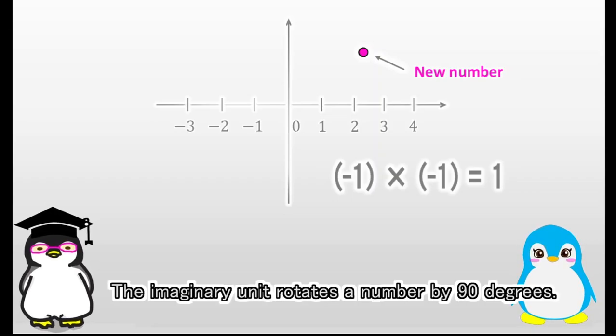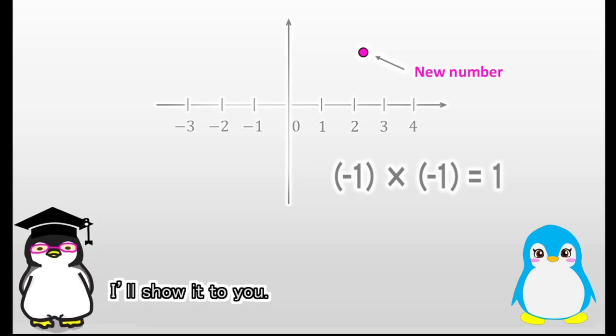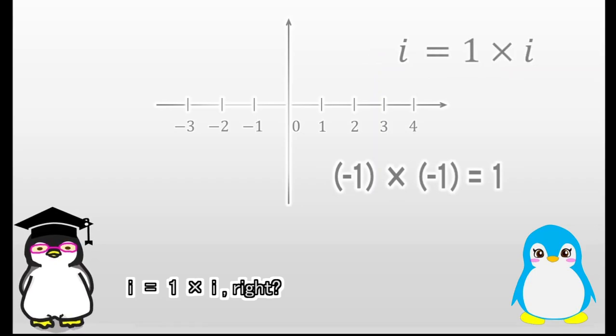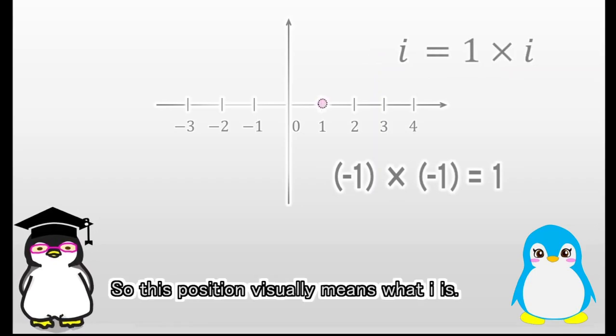The imaginary unit rotates a number by 90 degrees. I'll show it to you. I equals 1 times I, right? So this position visually means what I is.